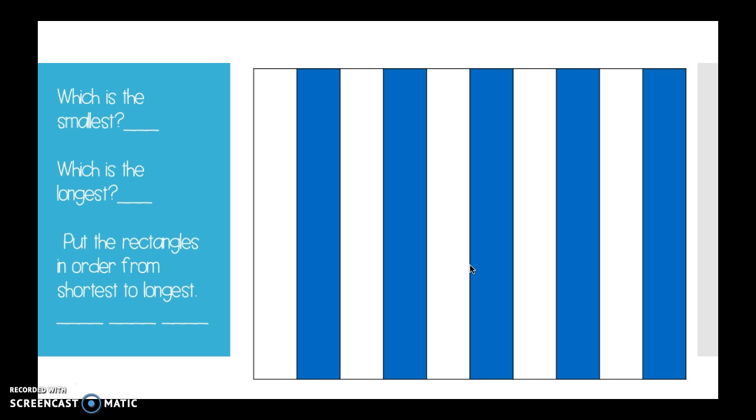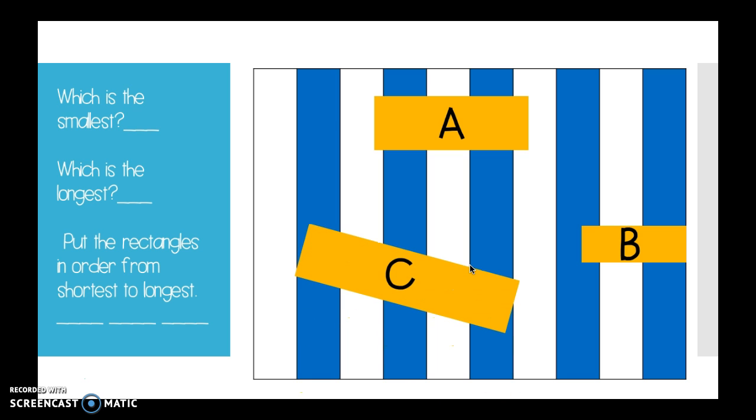All right. Do you have your board with you? All right. I need you to write a few things down. I do not want you to draw a picture. I want you to just use the picture on the board. I do not need you to write all the sentences. We're just going to write down our answer one by one. If you see on the side, there are three questions. The first one says, which is the smallest?